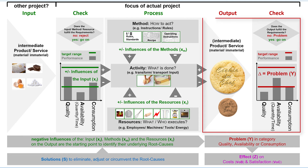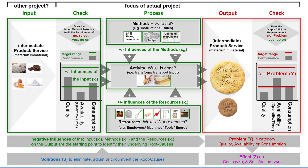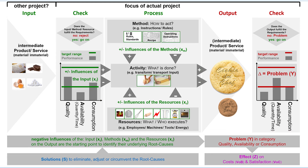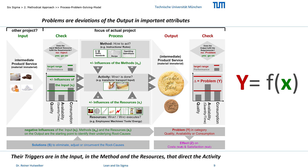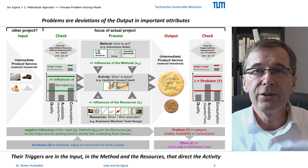This process problem-solving approach is the basis of our Six Sigma project. We start with the problems, and they are called Y's. The negative influences from the trigger to the underlying root causes are called X's. This notation results in the basic function for statistical analysis: Y is a function of X. Each Six Sigma project is based on definitions and principles — here the characters of the plot and their dialogues are detailed.